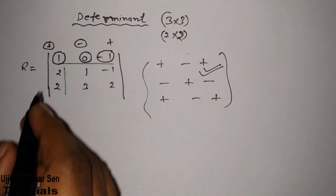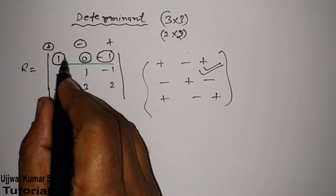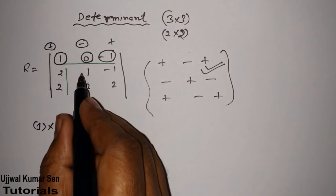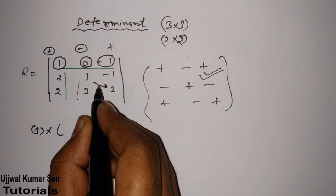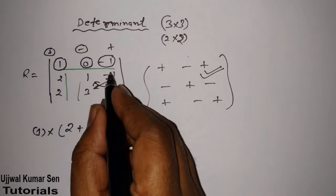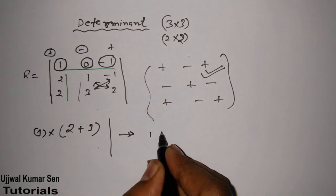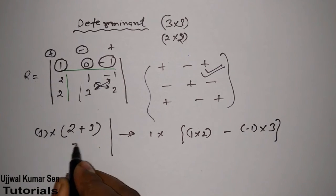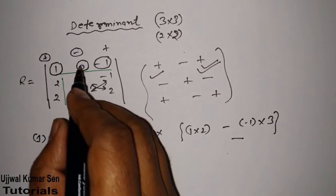For the first element, I select the value 1. I have to hide its corresponding column and corresponding row, and what remains is the sub-matrix. We do cross multiplication of the remaining part: 1 multiplied by (2 multiplied by 2 minus (-1) multiplied by 3).